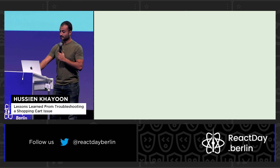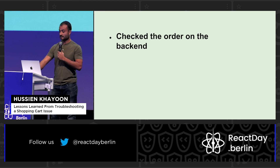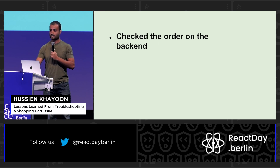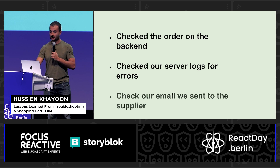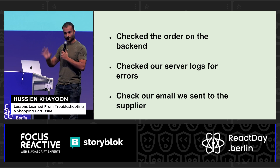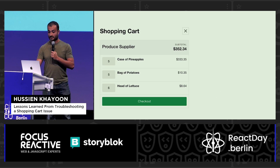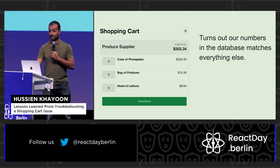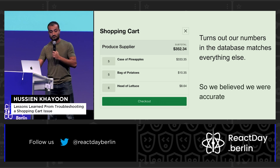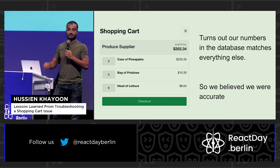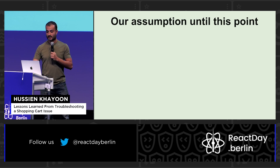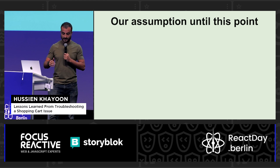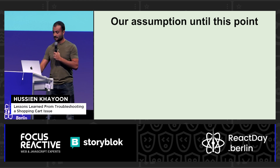In startup life, we did the same thing any developer would do: checked the order on the backend to make sure the numbers were correct, checked our server logs for any errors, and verified the emails sent to the supplier had the correct numbers. What we saw was that our numbers in the database matched everything. So we said, the customer is wrong, our data's right. That's why it's important to talk about our assumptions when we have bugs.